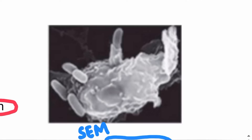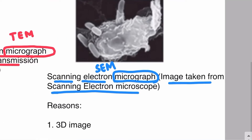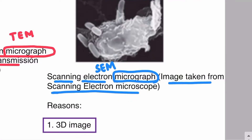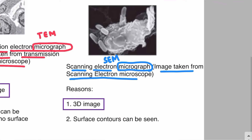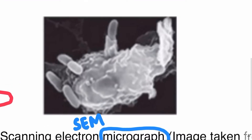If you look at an image and it is not 2D but rather a 3D image, it means that the image is taken from the scanning electron microscope. So the first identification factor for SEM is the 3D image, and the second identification factor is the surface contours.